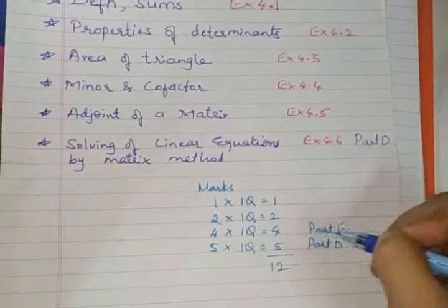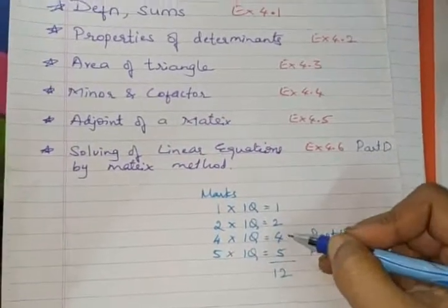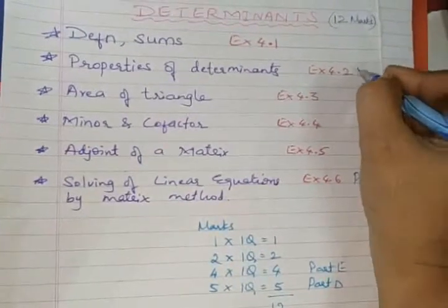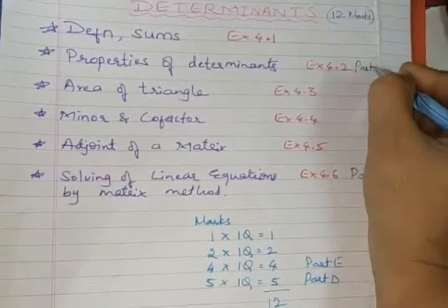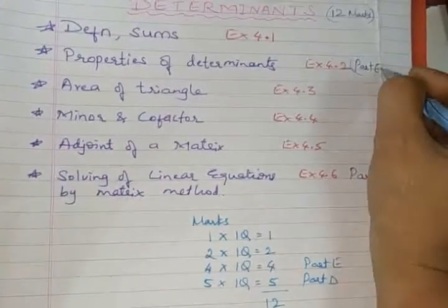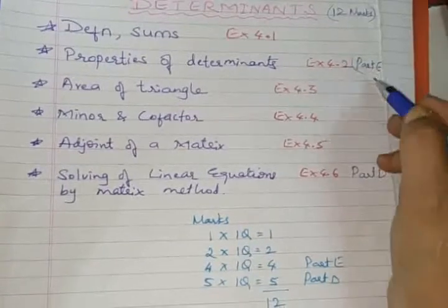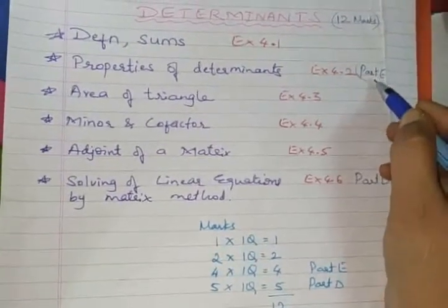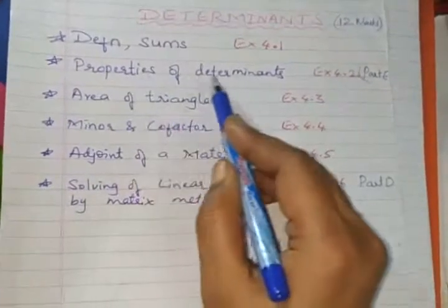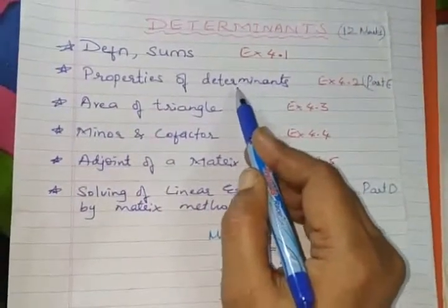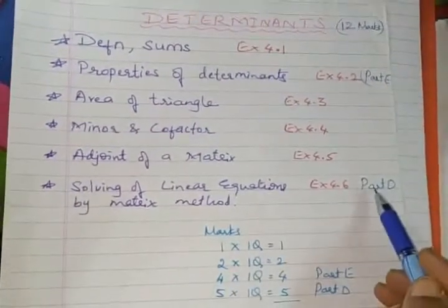To go for this part E section, 4 marks question. This question is always asked. When we observe the previous question papers, this is taken for properties. Section E, 4 marks question is always selected from 4.2 exercise. That is the properties of determinant. This topic has been highlighted.